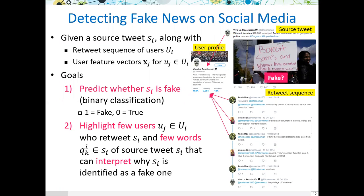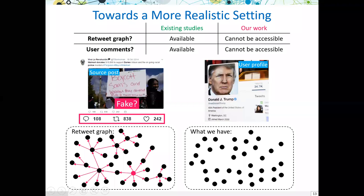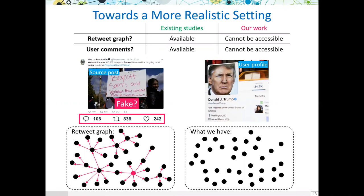We would like to share multiple applications based on graph neural networks. The first is detecting fake news on social media. Given a source tree, the sequence of users who retweeted it, and each user's feature vector, our goal is to predict whether the source tree is fake — a binary classification problem. Our problem setting is more realistic than existing studies: prior work assumes the retweet graph and user comments are available for training, but due to privacy or security concerns such information may not be available. Therefore, we do not assume the retweet graph and user comments can be used for training.